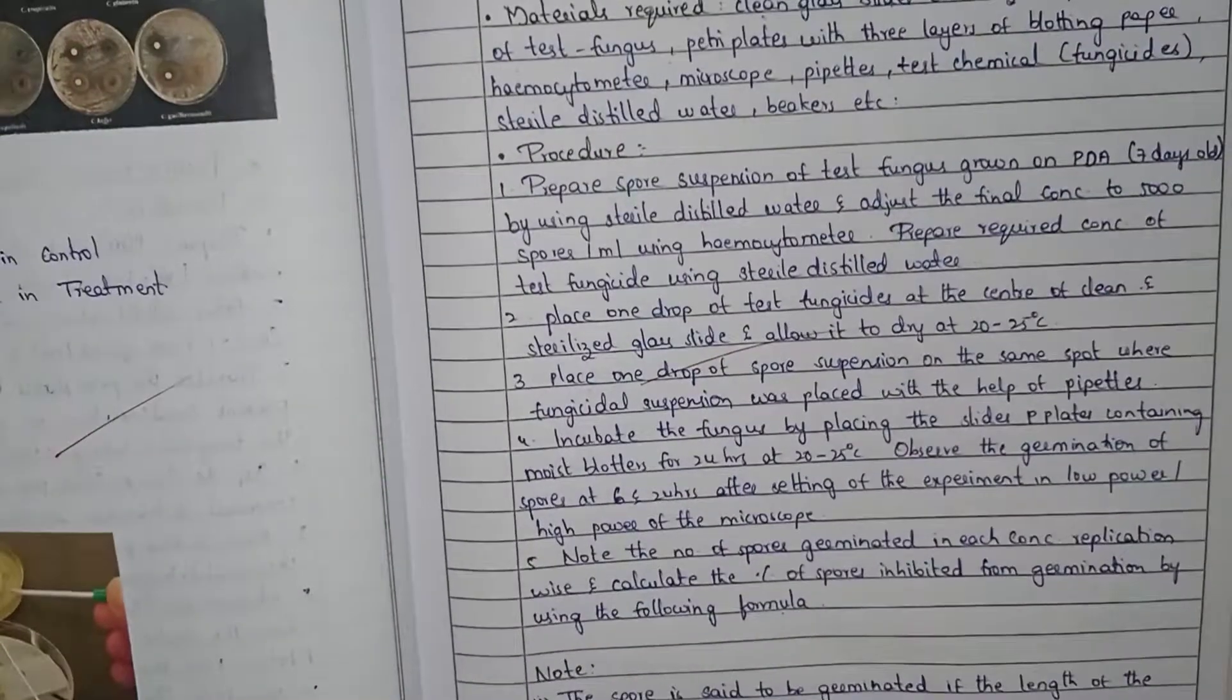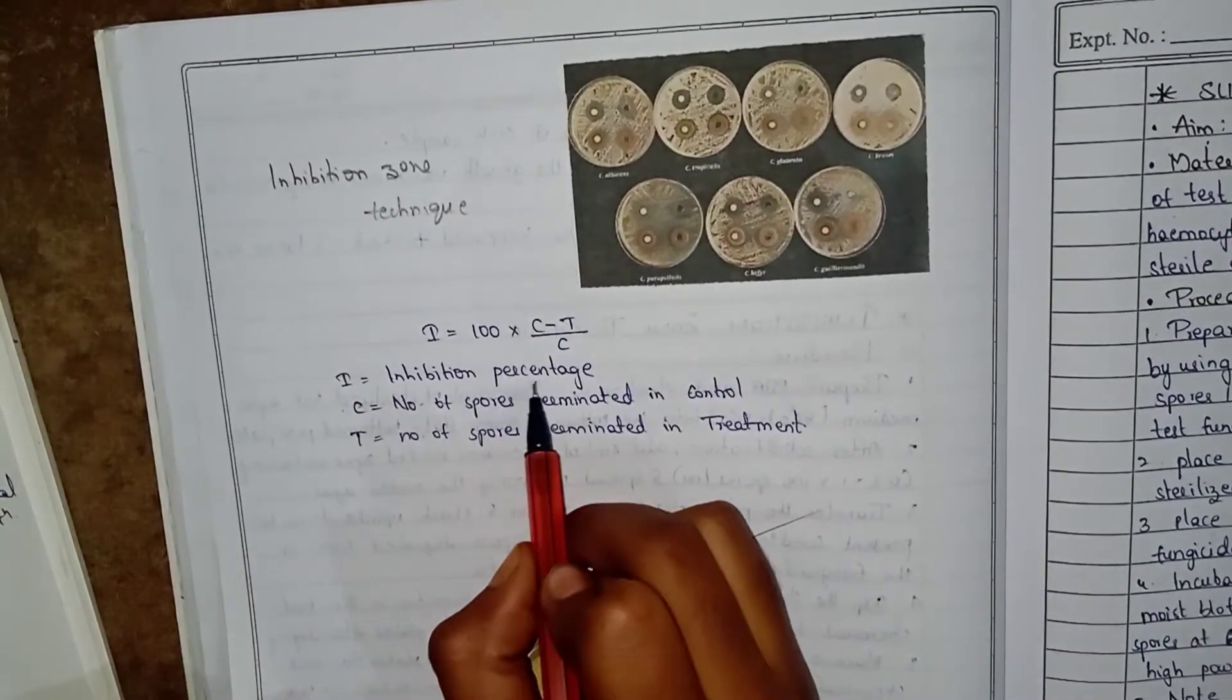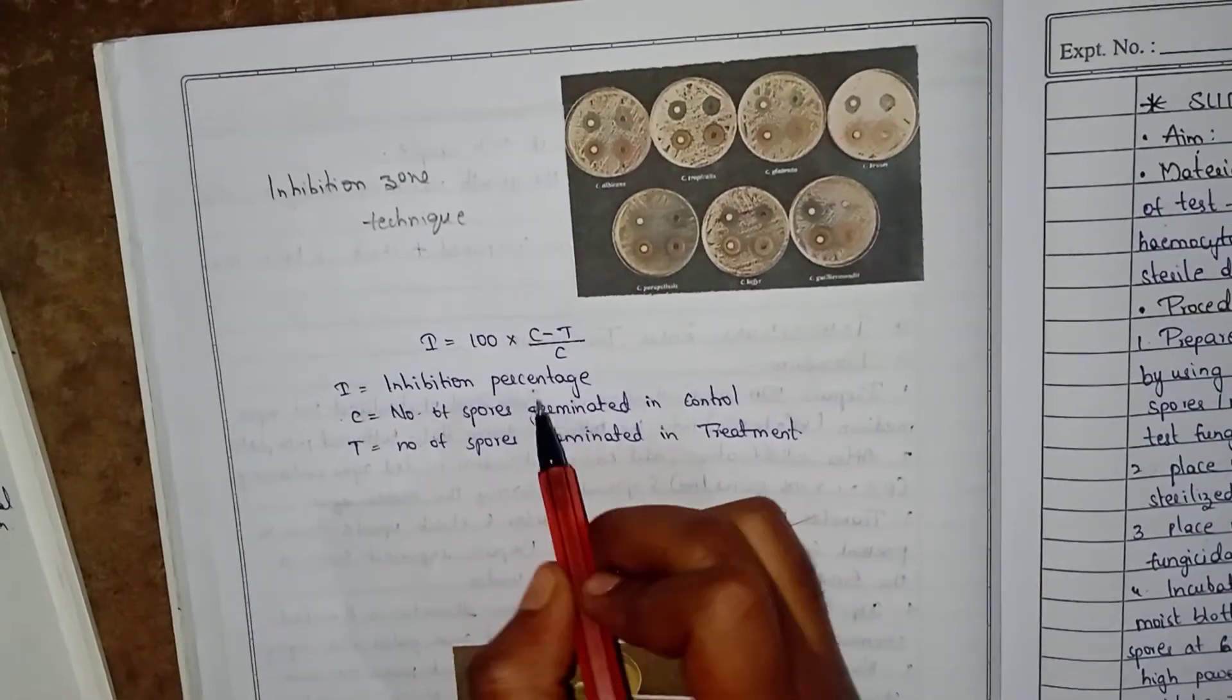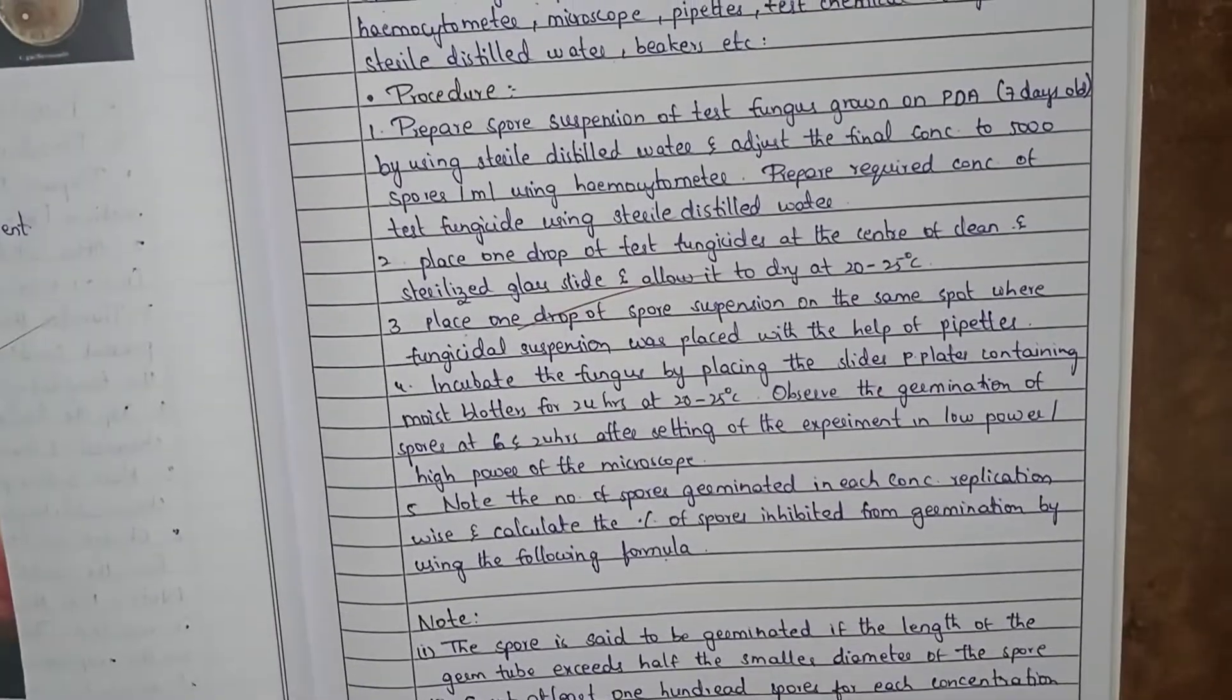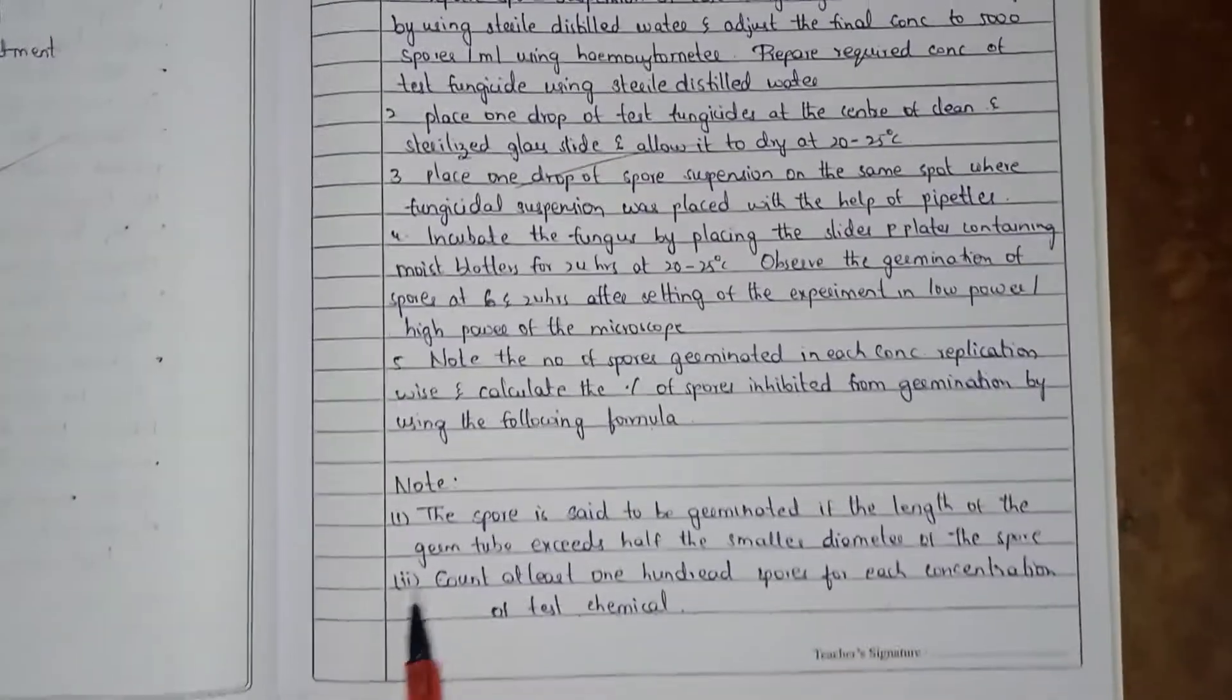Note the formula: I = 100 × (C - T) / C, where I is inhibition percentage, C is control, and T is treatment.